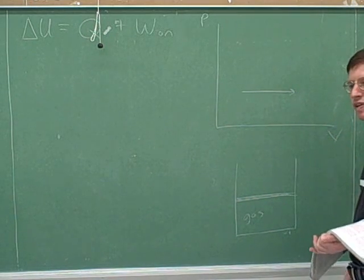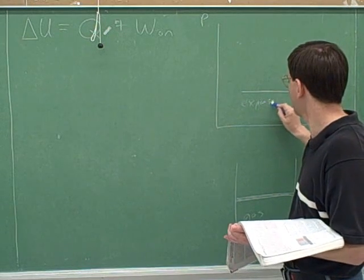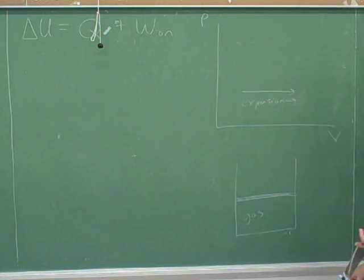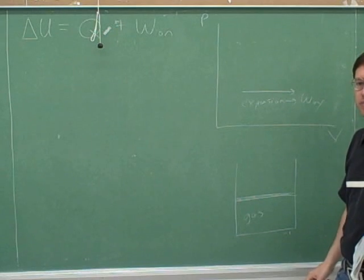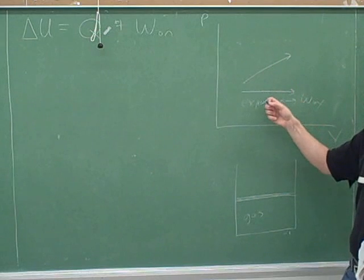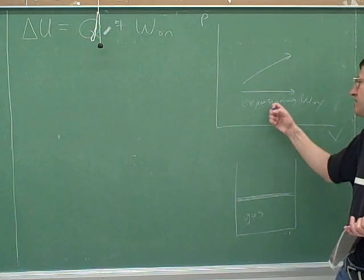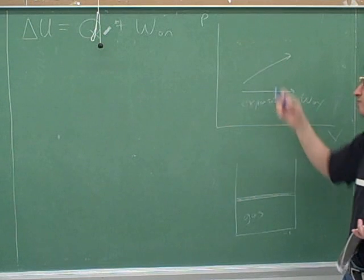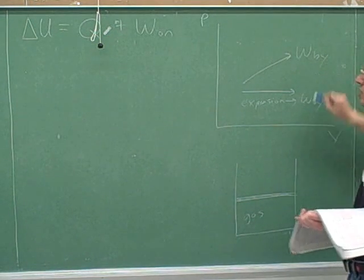If we're moving to the right — whether straight to the right or up and to the right — that means the gas is expanding, so work is being done by the gas. The key for work is not really the pressure; the key is whether you're expanding or compressing. Any time you're moving to the right in this graph, whether straight or diagonally, you're expanding, so work is being done by the gas. Both of these cases represent work done by the gas.